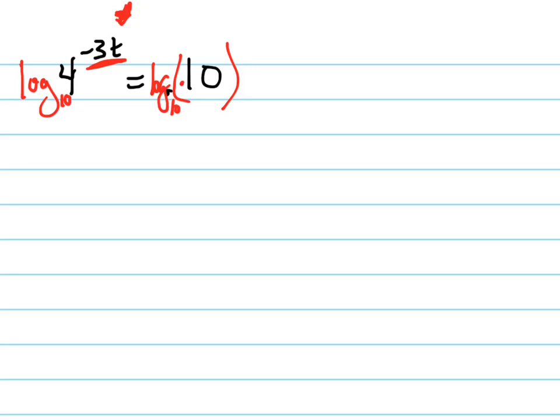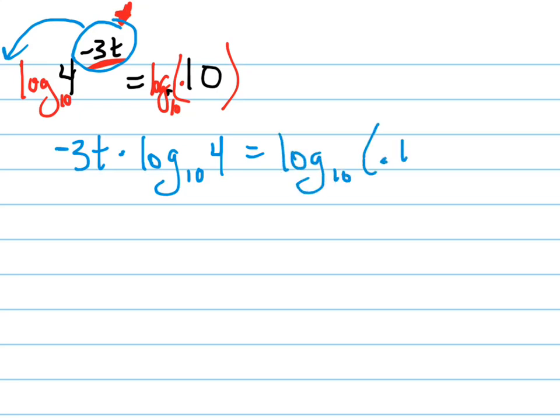And the reason I do that is because now I can take this exponent, because of that one rule, that one property of logarithms, I can take that down to the front. So here's my new equation. Negative 3t, let me make that look a little bit nicer. Negative 3t times the log base 10 of 4 equals the log base 10 of 0.10.